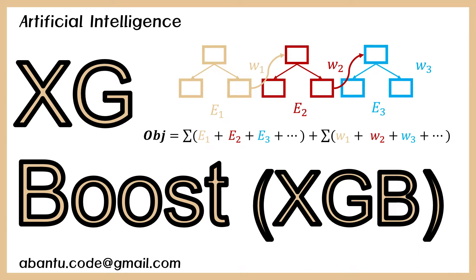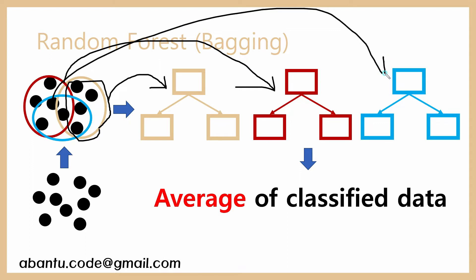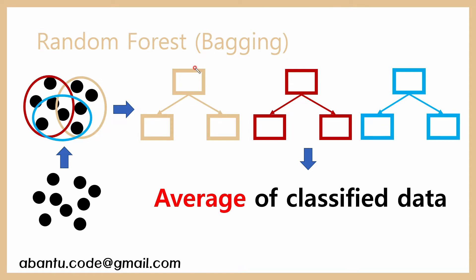XGBoost will become more and more popular. Let's compare it with Random Forest. In Random Forest, we take a sample of the whole data and make multiple decision trees. We then combine the results by taking an average or a majority vote to get the final result. This process of gathering results and getting a representative value is called bagging.